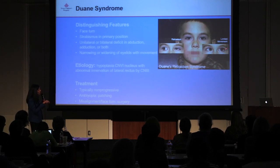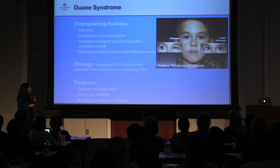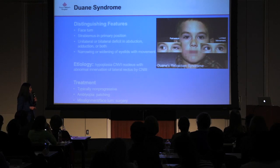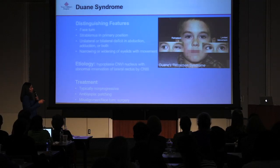To distinguish Duane syndrome from sixth nerve palsy: when the child looks to the right, there is a narrowing of the interpalpebral fissure. Patients with Duane syndrome can present with a face turn, strabismus in primary position, and a unilateral abduction deficit. They can have unilateral or bilateral deficits in abduction, adduction, or both. There are several different forms. In addition to fissure narrowing on adduction, they can have widening when they abduct. The etiology is hypoplasia of the sixth nerve nucleus, causing the lateral rectus to be abnormally innervated by the third nerve. These are typically non-progressive.